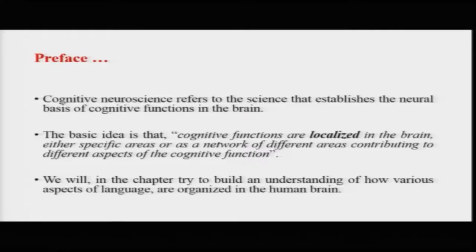For example, is information about animate objects stored in a particular part of the brain or in a distributed sense? In language production, is Broca's area the only area responsible, or is Broca's area a very prominent part of a network of areas that help you produce language? In this chapter we will revisit mental functions with respect to language and see which parts of the brain are involved.